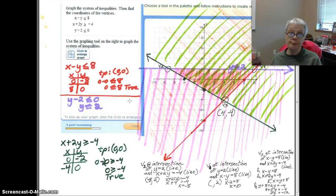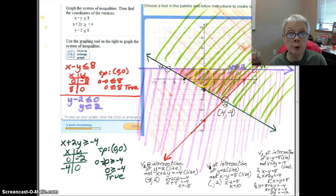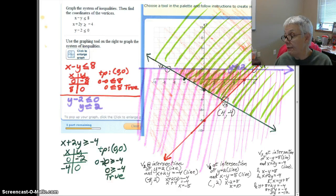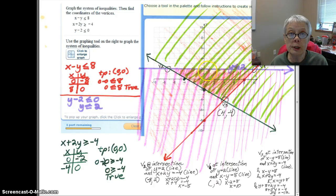Now for the new part. Where the colors overlap is our solution set. The vertices, that's the plural of vertex, the three vertices are at the intersection points of the lines that enclose the solution set.